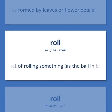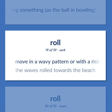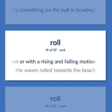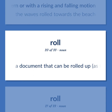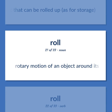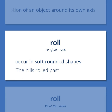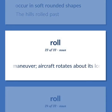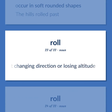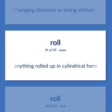The act of rolling something, as the ball in bowling. Move in a wavy pattern or with a rising and falling motion — 'The waves rolled towards the beach.' A document that can be rolled up, as for storage. Rotary motion of an object around its own axis. Occur in soft rounded shapes — 'The hills rolled past.' A flight maneuver where an aircraft rotates about its longitudinal axis without changing direction or losing altitude. Anything rolled up in cylindrical form.